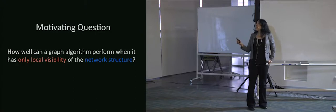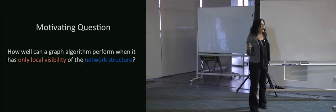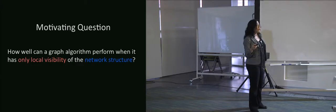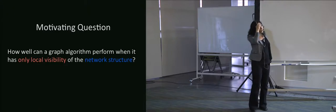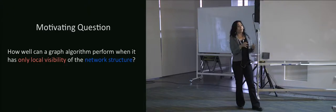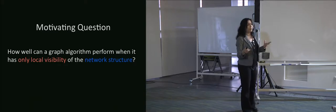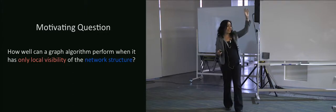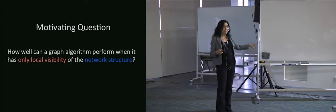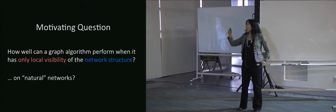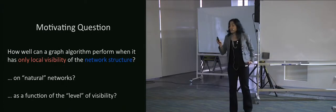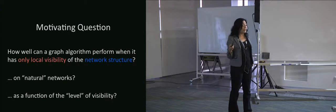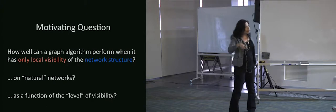The motivating question is: how well can a graph algorithm do when we have only local visibility of the network structure? Later I'll also add a uniformly random hop — the kind of thing we sometimes see in PageRank — where you can access a uniformly random site from the graph in addition to local access. And how do we do this on natural networks as a function of the level of visibility from your current location?